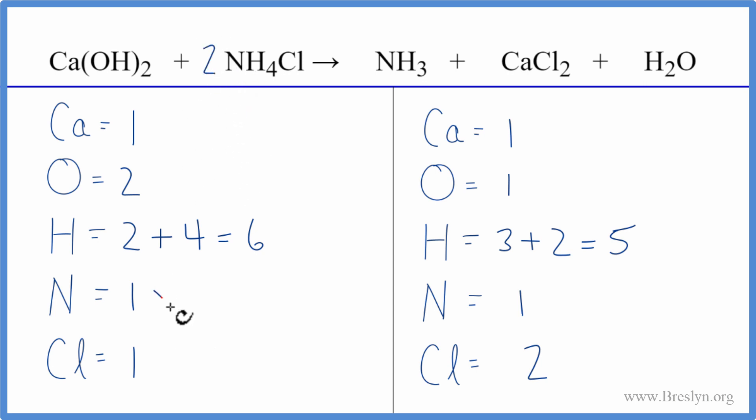So we have one times two for the nitrogen. Then the hydrogen, we need to update that number. We have two times one, so two hydrogens, plus four times two is eight. So now we have ten hydrogen atoms. Chlorines, one times two, that'll give us two. So we've balanced the chlorines.